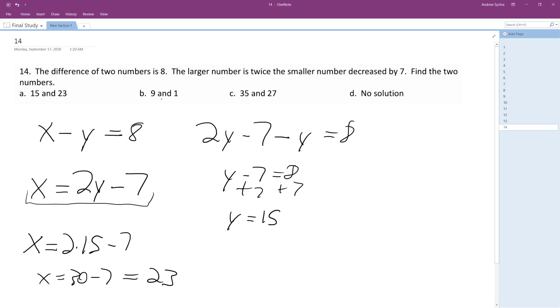So 23 and 15. Yep, that's right here, but let's test this out. So 23 minus 15 does equal 8, and then 23 is equal to twice 15, which is 30, minus 7, which is equal to 23.